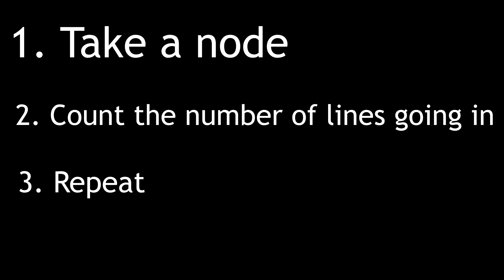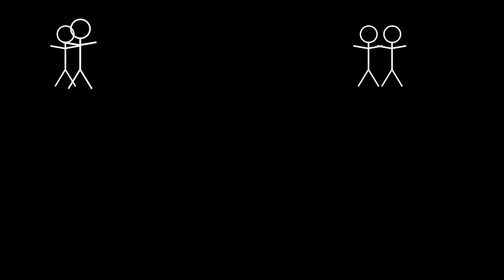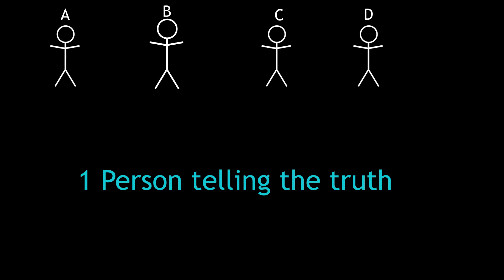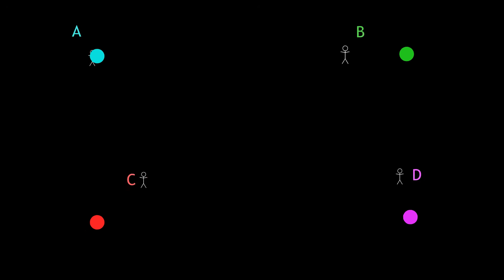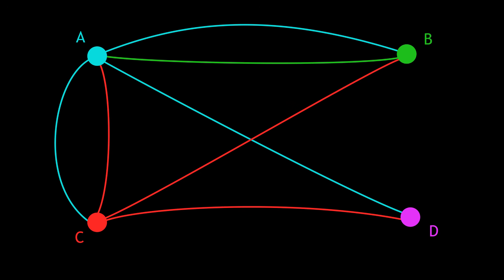So with three people, this method wasn't much quicker than just going through each person case by case. But say we have four people, A, B, C and D, and only one of them is telling the truth. A, B and C give the same statements as before, and D says B is the thief. We can draw a graph, filling in the lines coming from A, B, C and D.